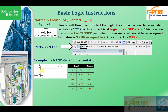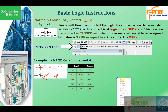We can use normally closed contacts to implement the NAND operation. The NAND operation says that when both inputs are one the output is zero. When A is off and B is off, logic flows through both closed contacts to the output. When one of them is on, that contact prevents the flow of logic. When both are on, they both open and prevent the flow of logic, so the output becomes off.